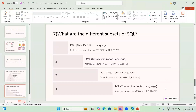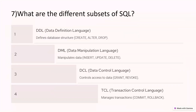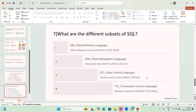Another frequent question is: what are the different subsets of SQL? The answer is DDL, DML, DCL, and TCL. DDL stands for Data Definition Language — it defines the database structure. Commands: CREATE, ALTER, DROP, TRUNCATE. DML stands for Data Manipulation Language — it manipulates data. Commands: INSERT, UPDATE, DELETE. DCL stands for Data Control Language — it controls access to data. Commands: GRANT and REVOKE. TCL stands for Transaction Control Language — it manages transactions. Commands: COMMIT and ROLLBACK.